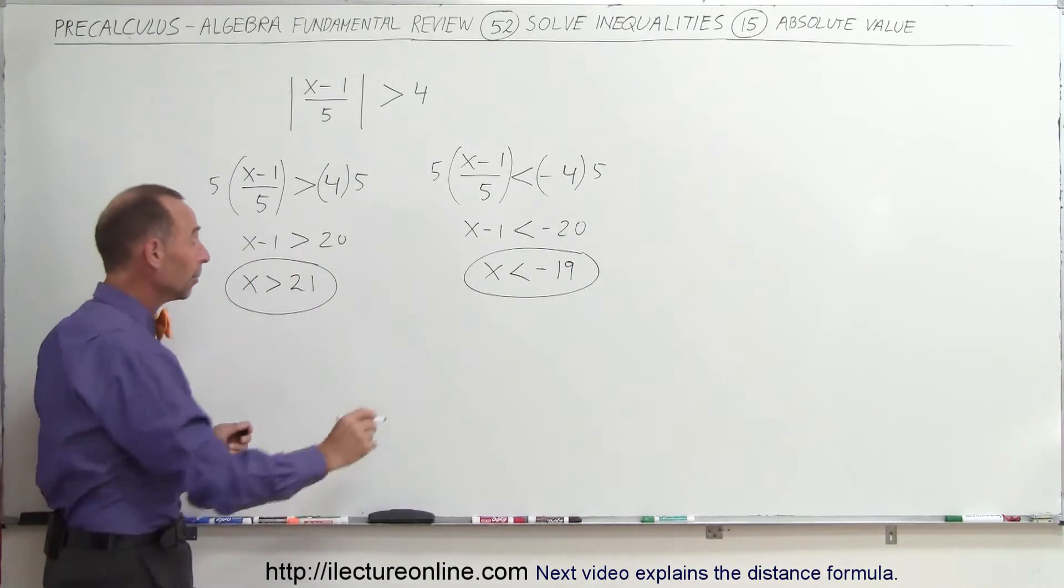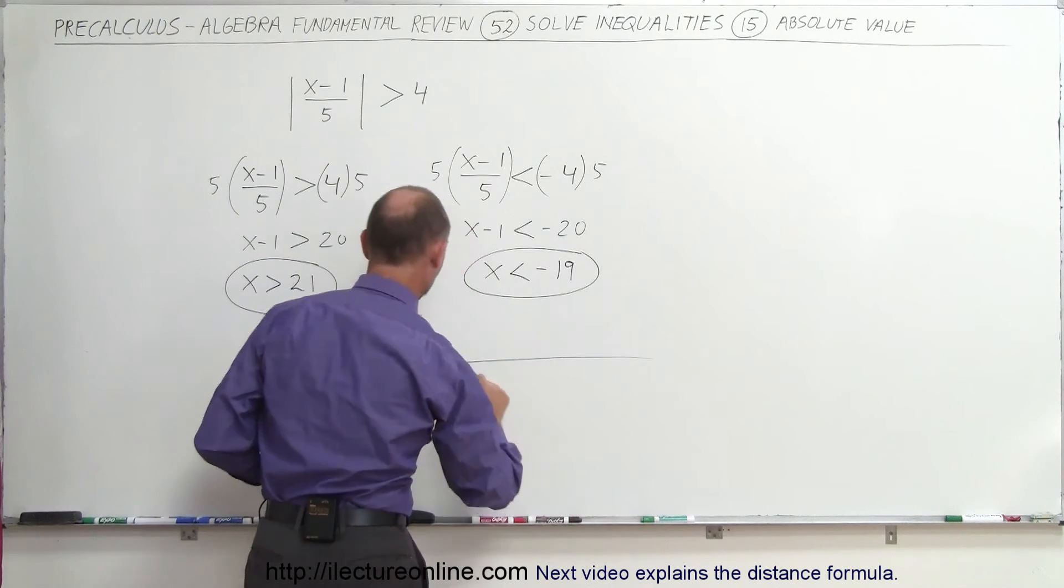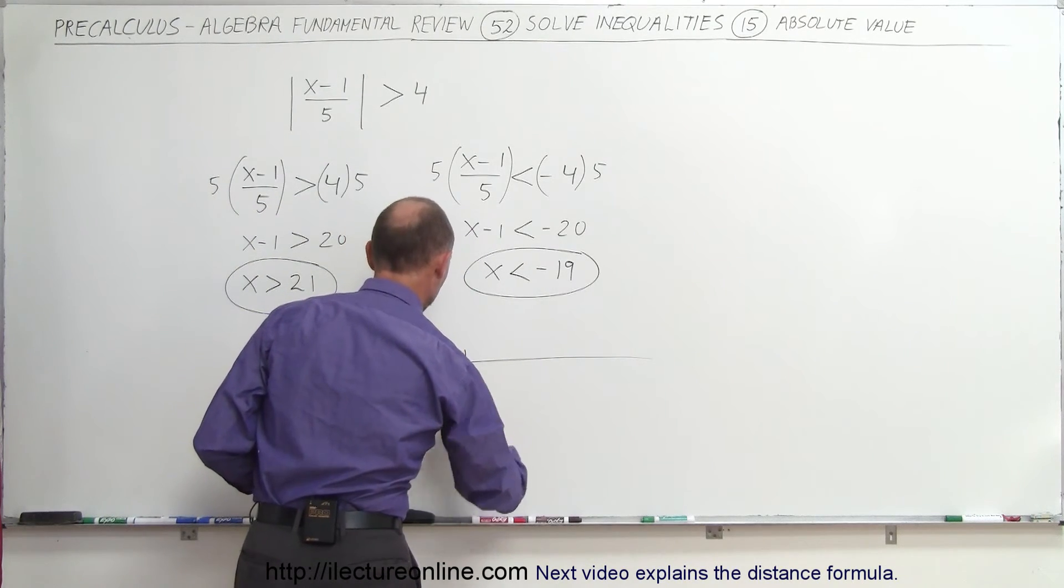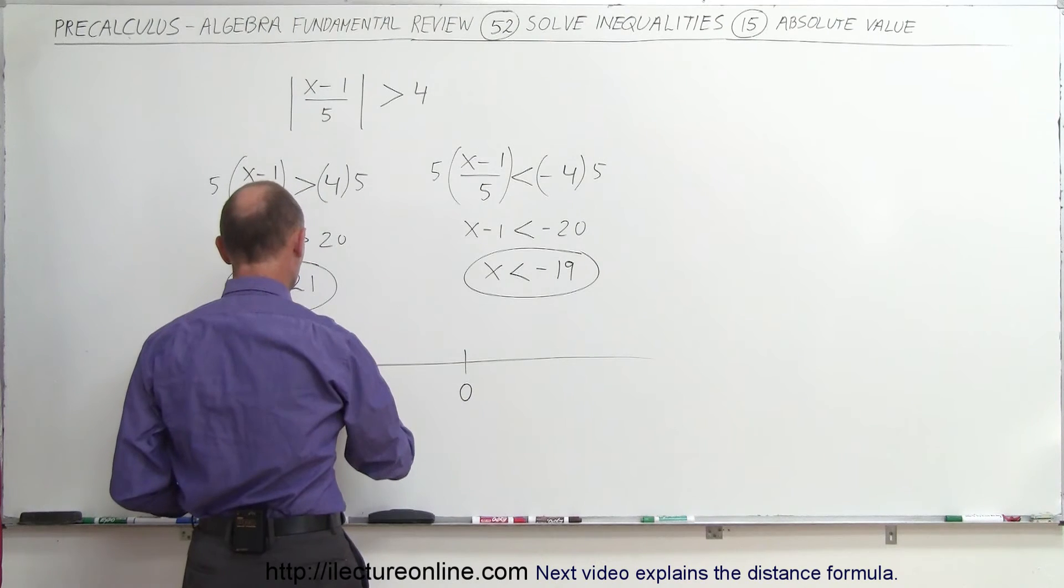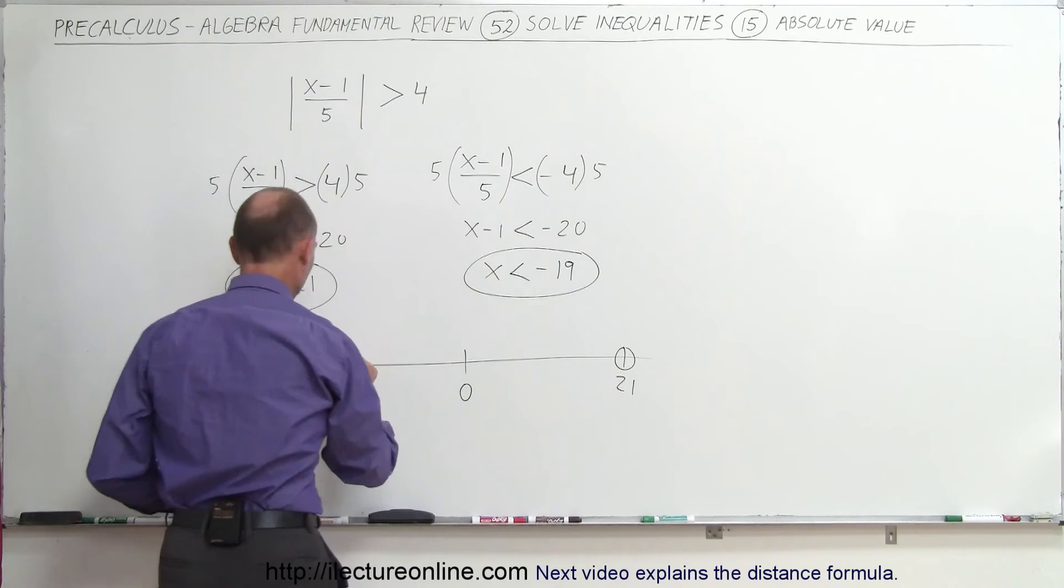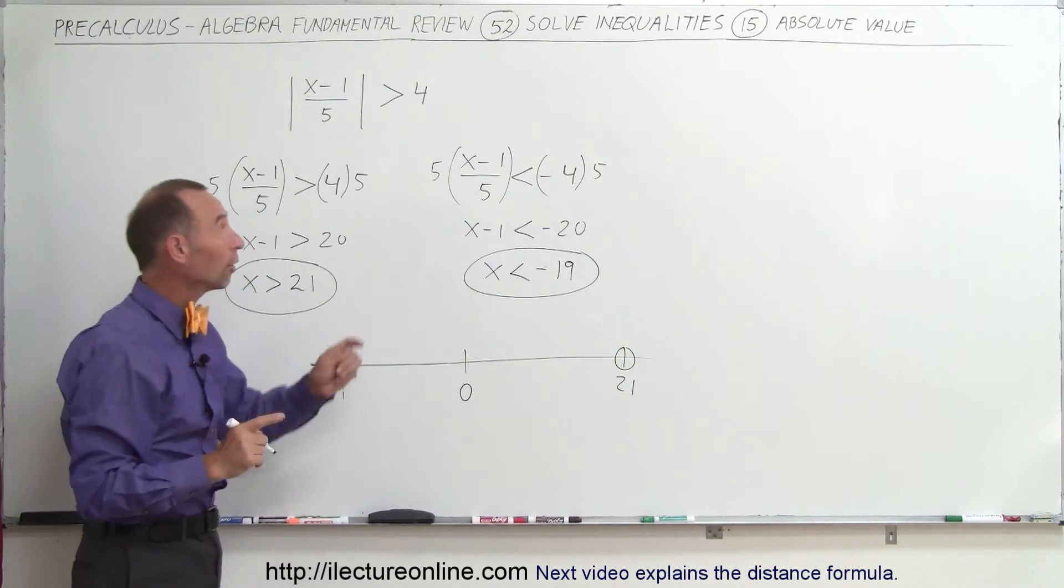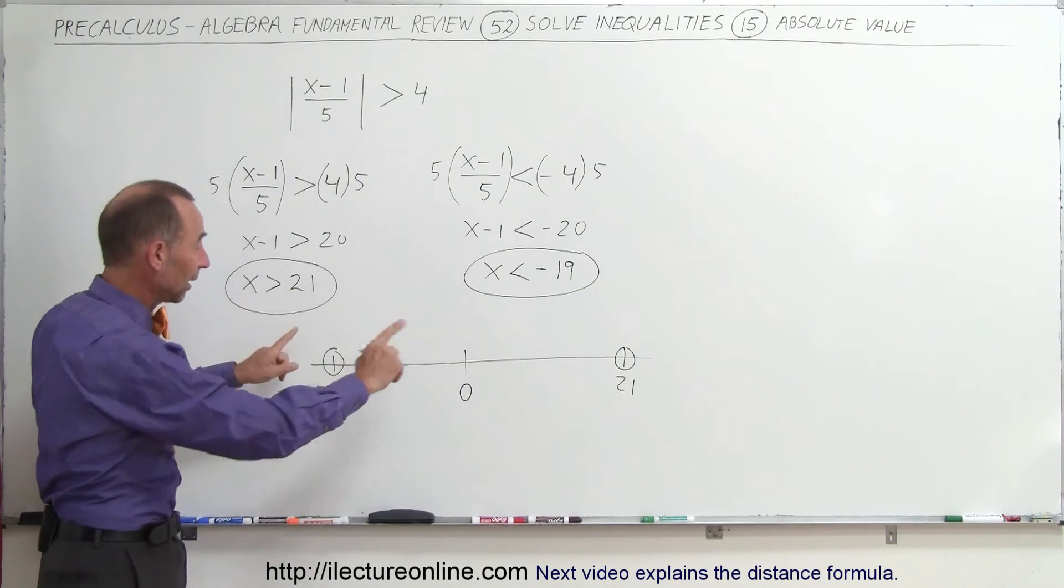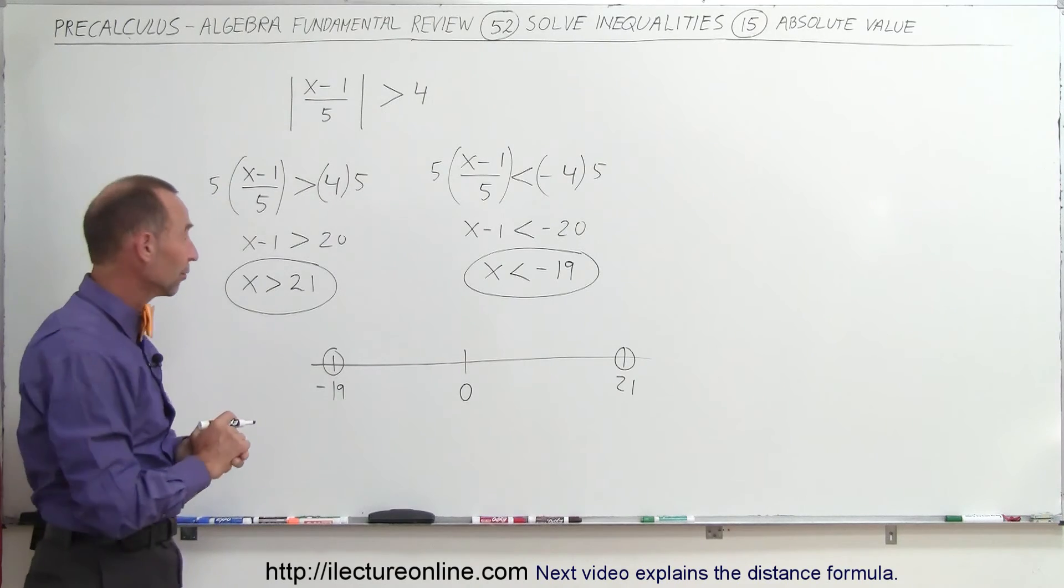If we then place it on the number line, all the values for x that satisfy the inequality: we have the point 0, minus 19 is over here, plus 21 is over there. We draw little circles around it. It does not include the endpoints because we don't have an equal symbol there, so not including negative 19 and positive 21.